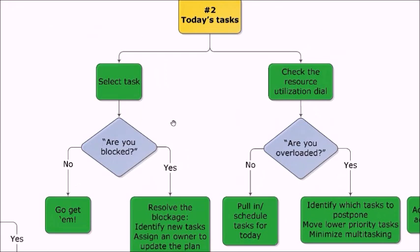Then we look at what the person has on their current day. We select tasks one at a time so we can see them in the game plan as well — it's quite helpful. We ask some form of: 'Are you blocked?' or 'Is there anything getting in your way?' That's a very open-ended question and the person will likely give you a bit of a status report, and a little bit of that is fine.